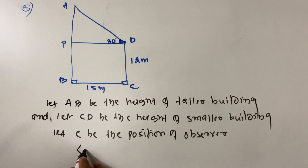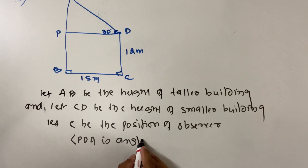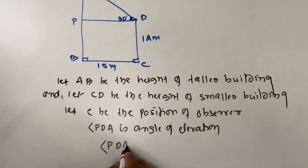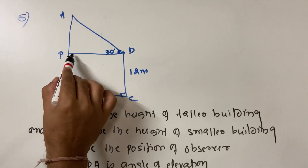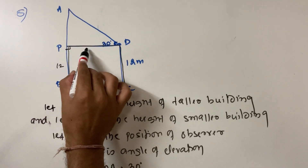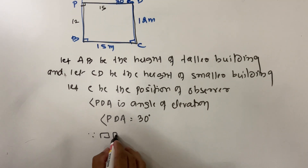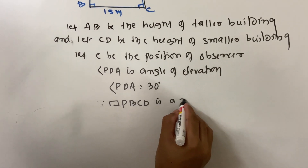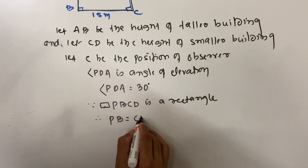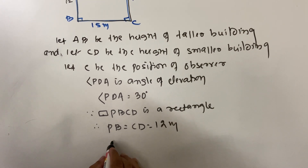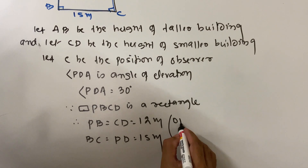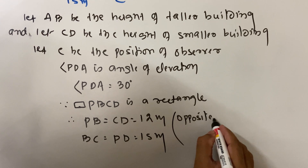Let C be the position of the observer. Angle PDA is your angle of elevation and angle PDA equals 30 degrees. Since PBCD forms a rectangle — each angle is 90 degrees — we can say PB = CD = 12 meters, and BC = PD = 15 meters. These are opposite sides of a rectangle.